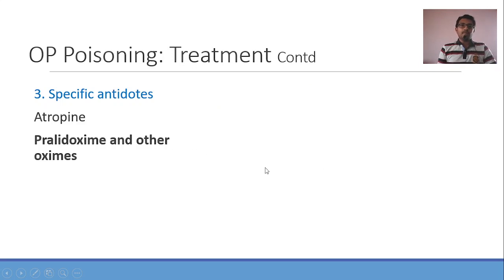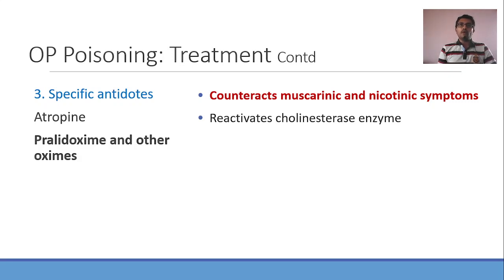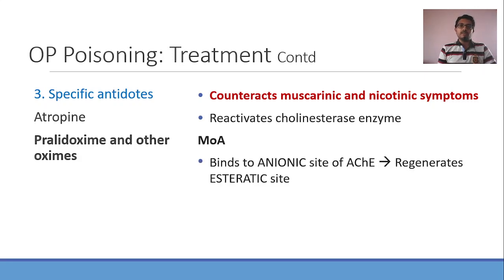The second antidote is pralidoxime and other oximes. Pralidoxime counteracts both muscarinic and nicotinic symptoms because its mechanism of action is to reactivate the cholinesterase enzyme that was inhibited by the OP compounds. The cholinesterase enzyme has two sites: an anionic site and an esteratic site. For pralidoxime to reactivate the cholinesterase enzyme, it is mandatory that the anionic site be free. It binds to the anionic site of acetylcholinesterase and regenerates the esteratic site. That is the mechanism of pralidoxime.